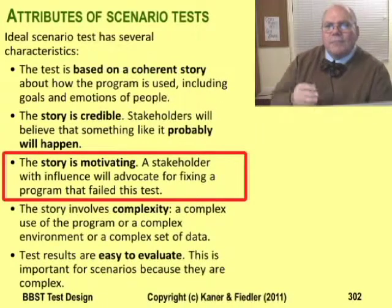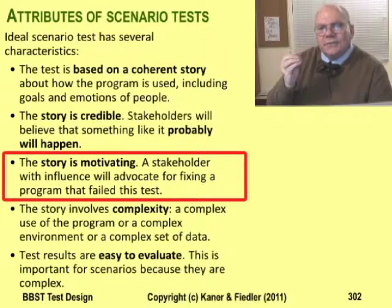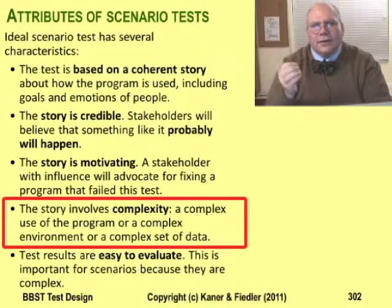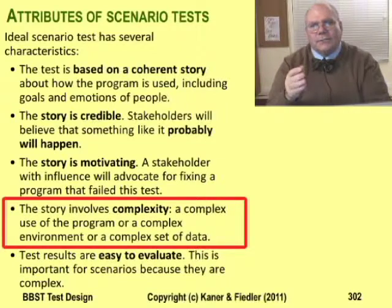In this case, we have a motivated person with influence who's going to get the bug fixed — that's the marketing manager. The tester chose this PageMaker example specifically to attract the attention of that person. Now this started out as a very simple function test: just take a picture and put it in the corner — a boundary case. Normally, you don't take a function test or a boundary test and turn it into a scenario. It takes time to create these stories.